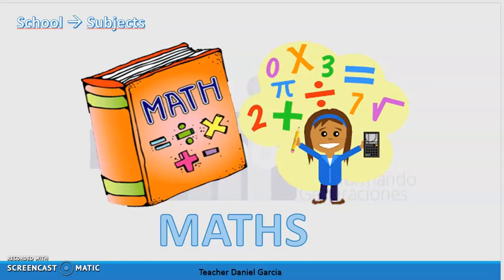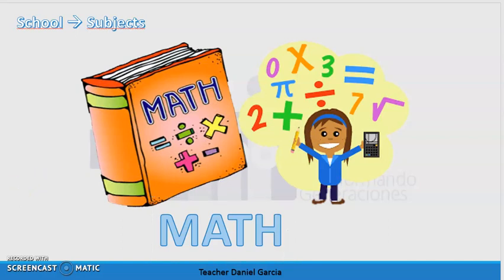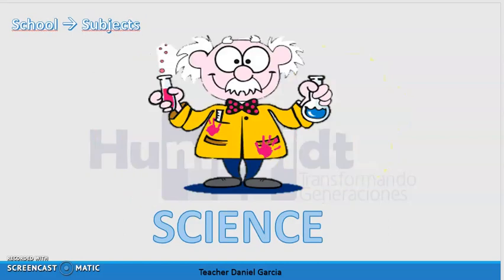The next subcategory is academic subjects — materias académicas. The first one is maths, or just math — this is British English. Math without the 's' is American English. The next subject is science — ciencias naturales. You can also say biology or chemistry.